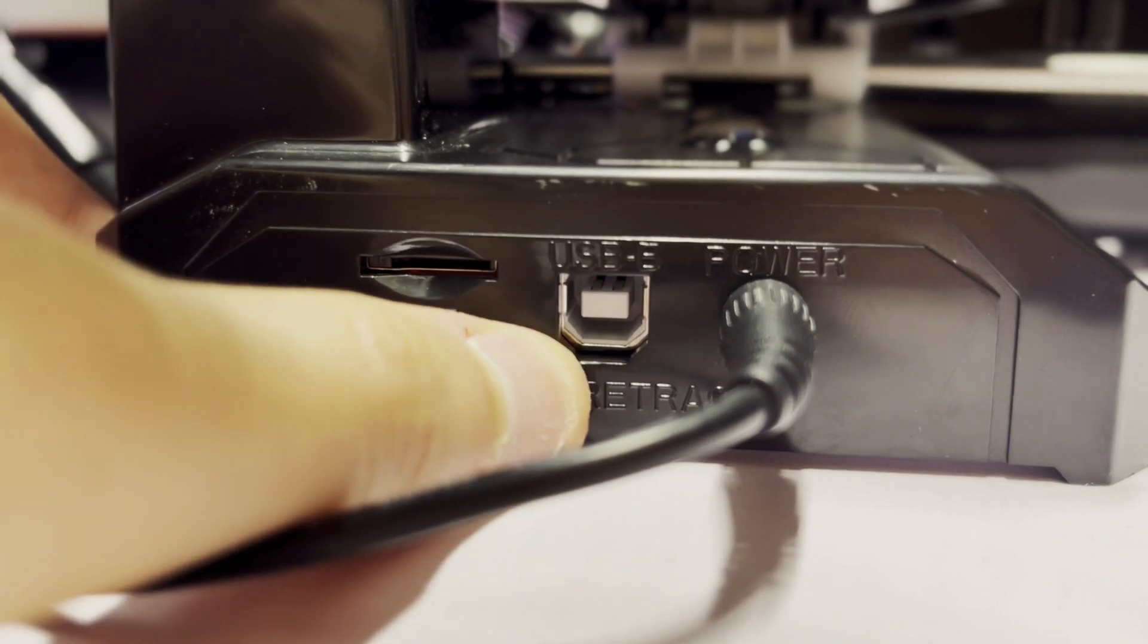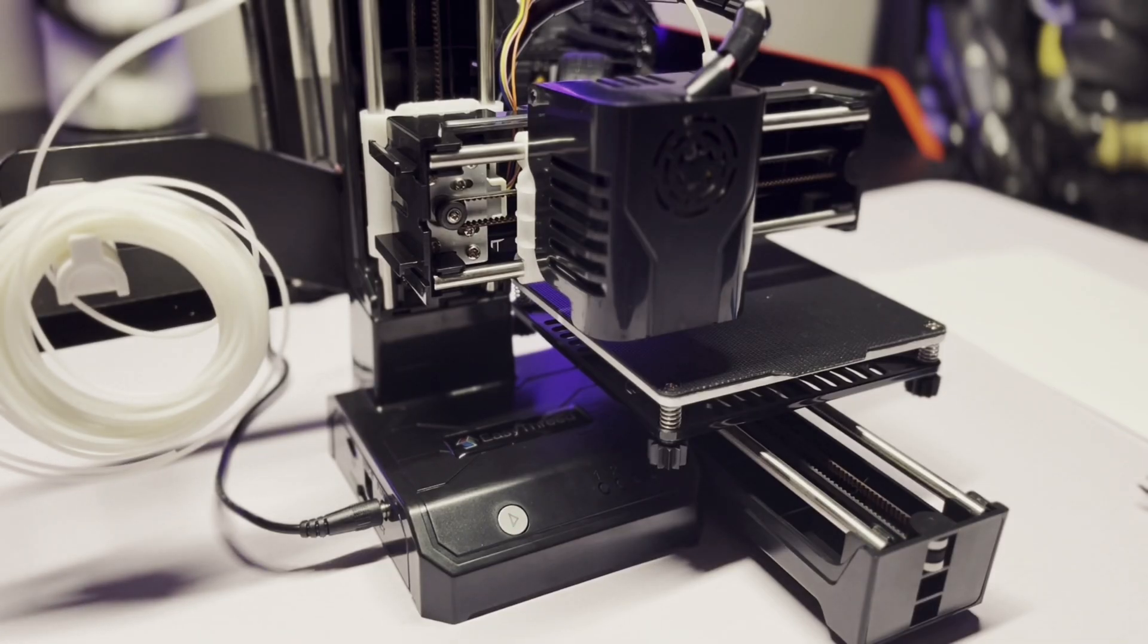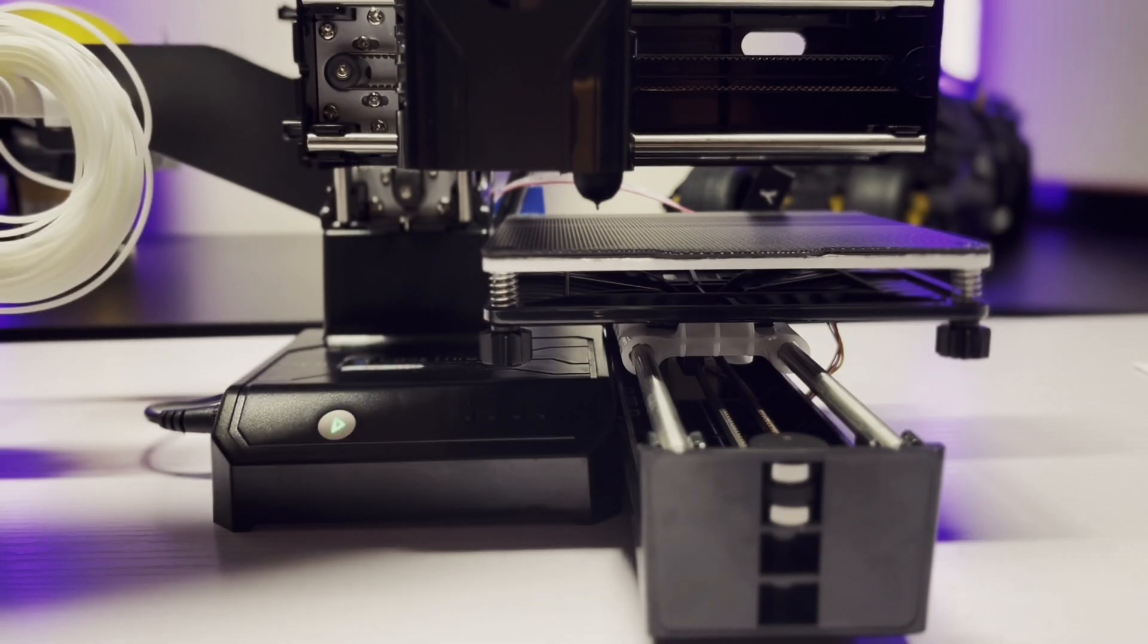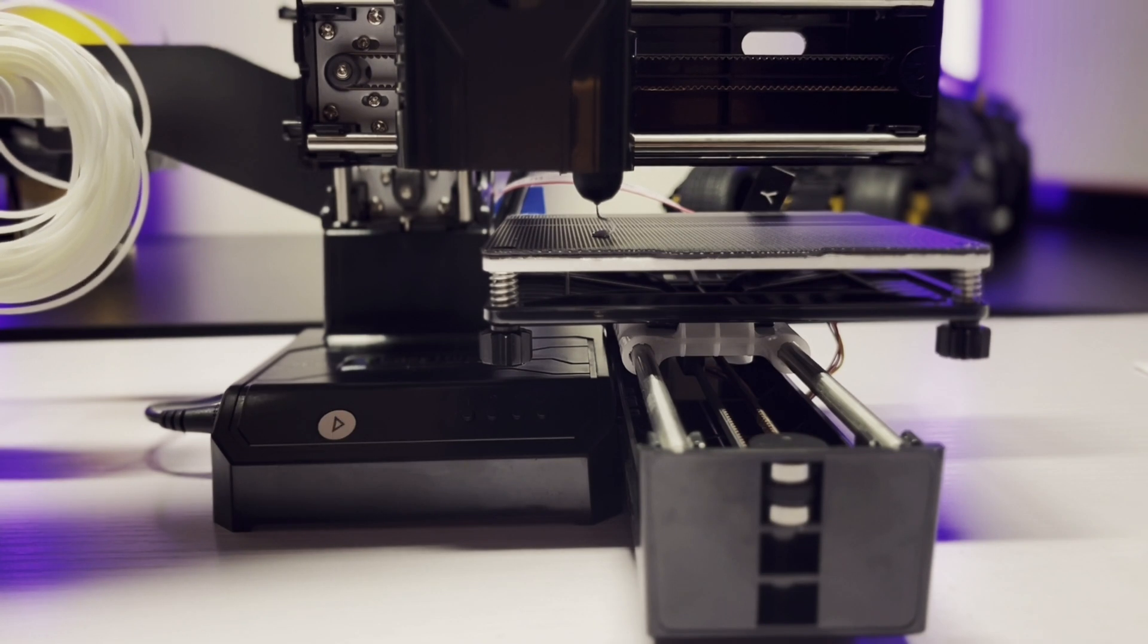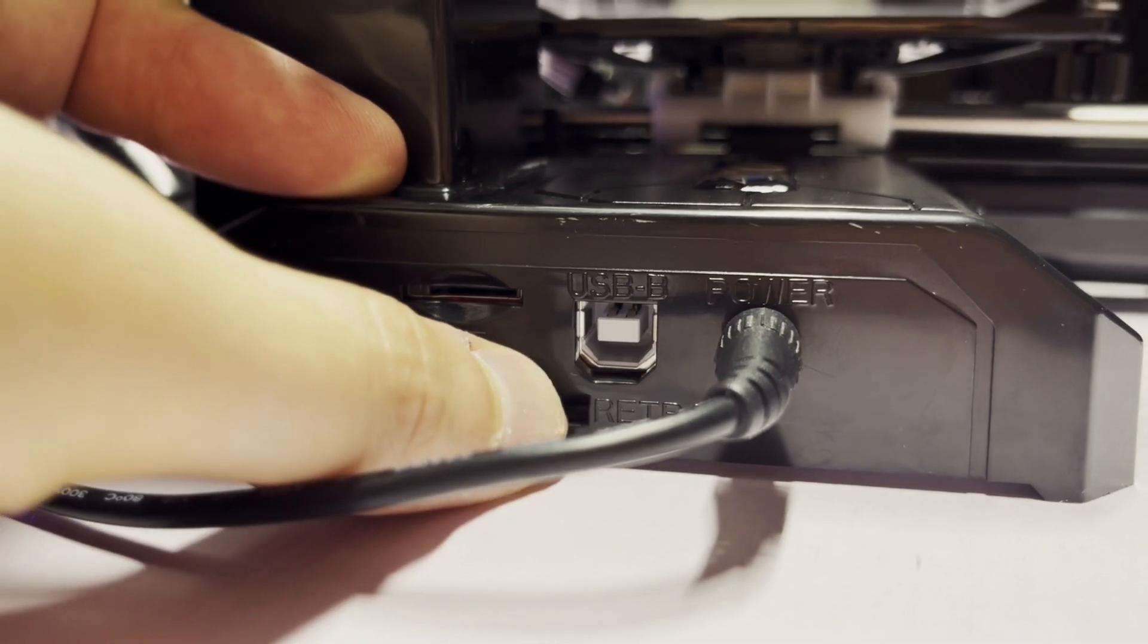I load the filament by feeding it into the extruder until I feel some slight resistance. At that point, the feed switch can be turned on. The printer button will blink green really fast, which means the printer head is heating up. Once the green blinking begins to slow, the gears of the extruder will start turning and grab the filament. Once I see the filament coming out of the nozzle, I can move the feed switch on the side of the printer back to the middle.